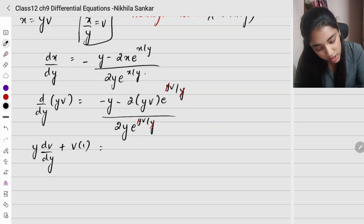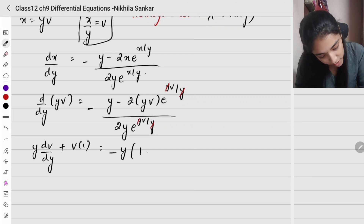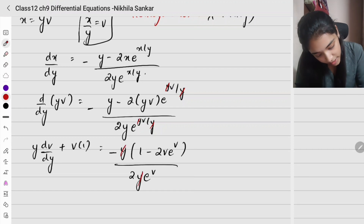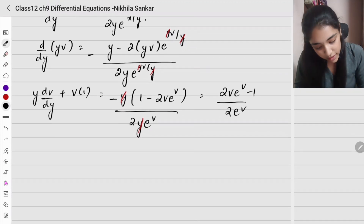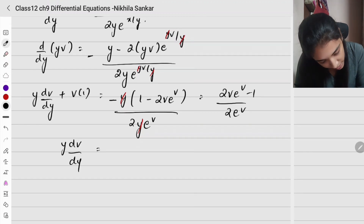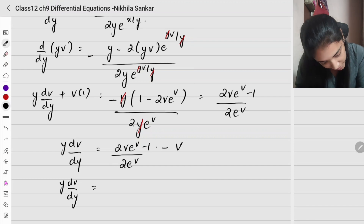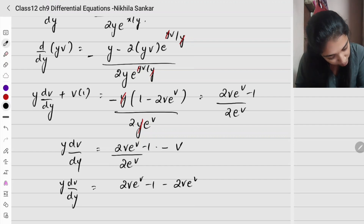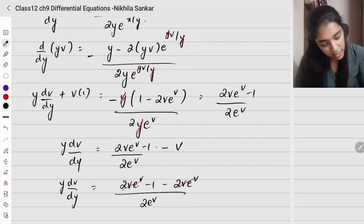Taking minus common in the numerator: minus 1 minus 2v e^v, the whole divided by 2y e^v. The y's cancel. So I have: y dv/dy equals 2v e^v minus 1 divided by 2 e^v, minus v. Taking LCM: y dv/dy equals 2v e^v minus 1 minus 2v e^v, the whole divided by 2 e^v.